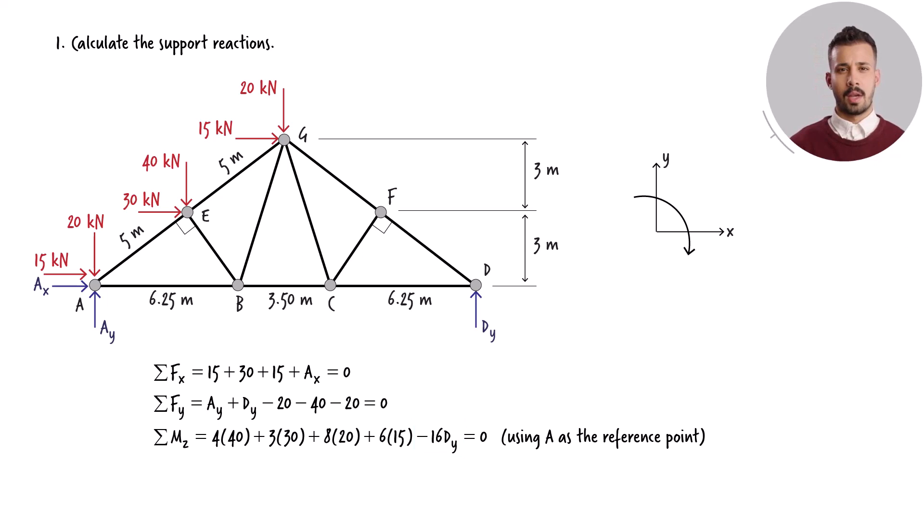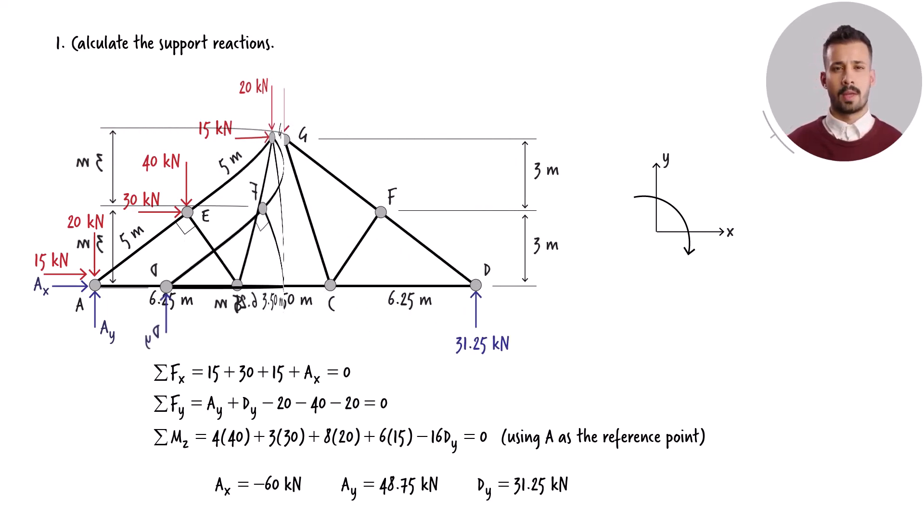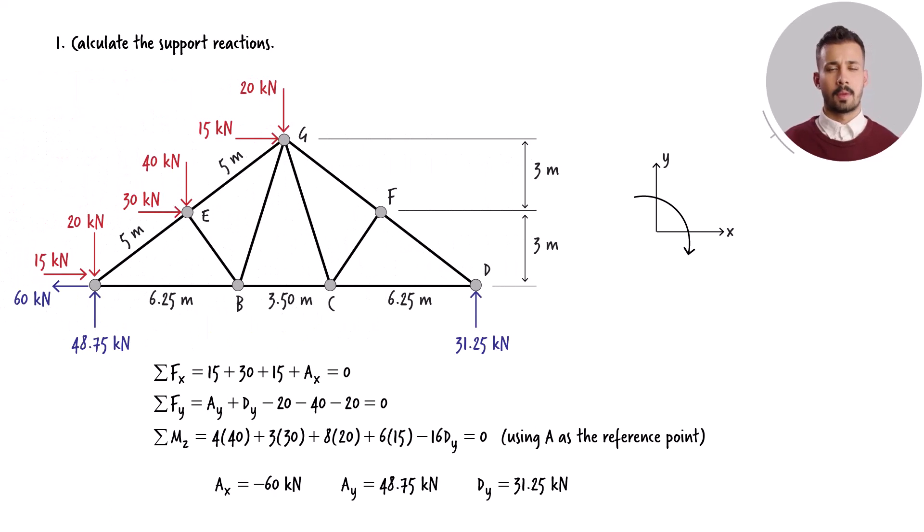Solving these equations for the unknown reaction forces, we get. Let's revise the truss's free body diagram to include the magnitudes of the support reaction forces. We are now in a position to apply the joint equilibrium equations to determine the member forces.